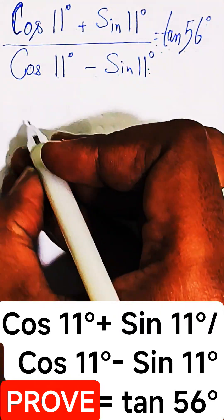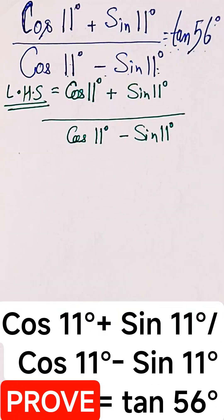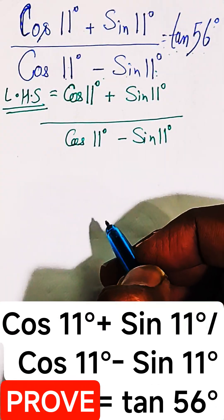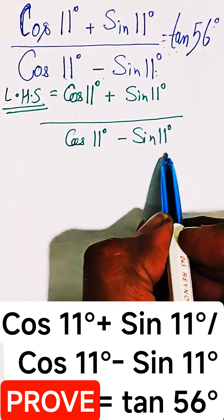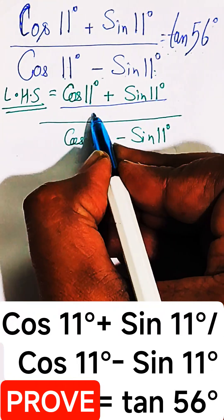So to prove this, take the LHS first. LHS is this one. Now do one thing, divide the entire numerator and denominator of the LHS by cos of 11.